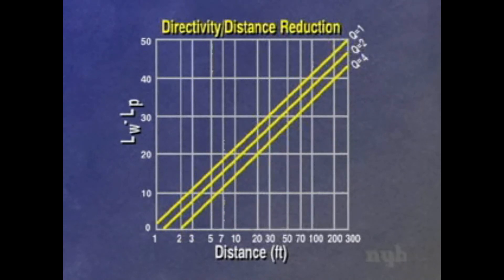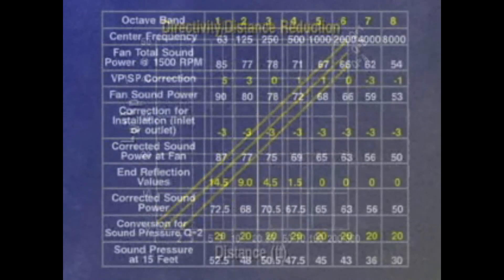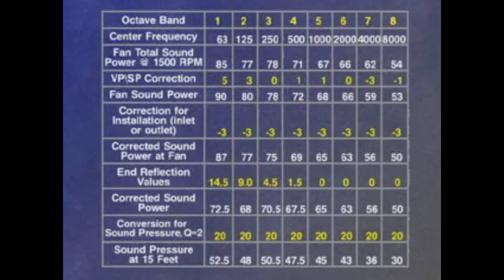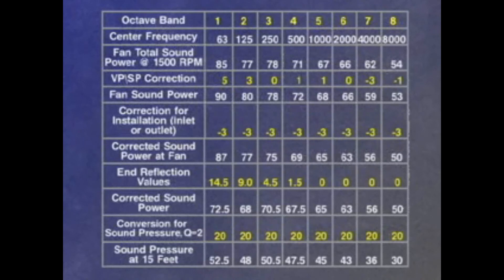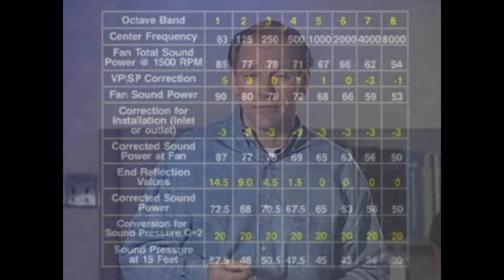Combining directivity factors and distance yields a graph. The further the distance and the fewer the reflecting surfaces, the larger the decibel reduction. Let's assume a floor-mounted fan in a large area, 15 feet from the listening location. This gives us the estimated sound pressure for this application.